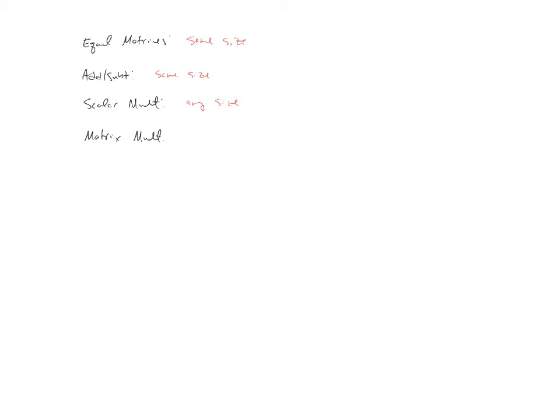For matrix multiplication it's a little more complex. If we have an M by N matrix multiplied with an N by R matrix, these two inner numbers being the same means yes, we can multiply. The number of columns of the first matrix must match the number of rows in the second matrix. If it does, you can multiply, and the size of the resulting matrix is M by R — the number of rows in the first matrix by the number of columns in the second matrix.